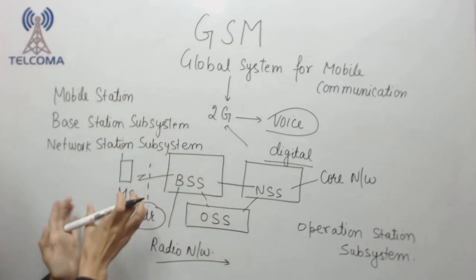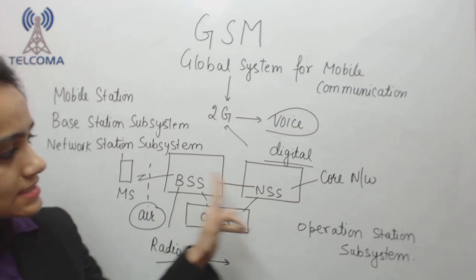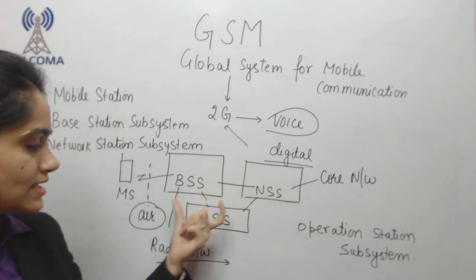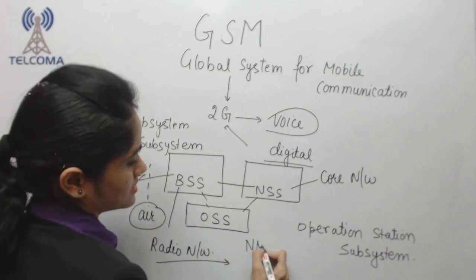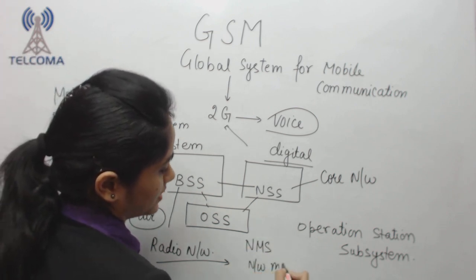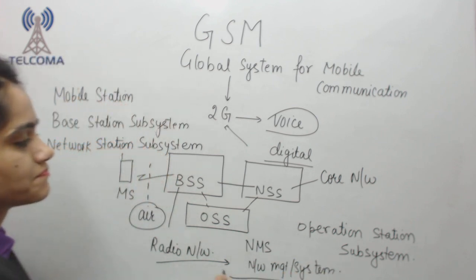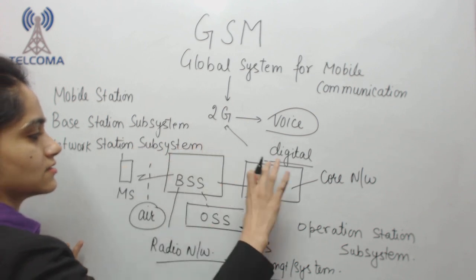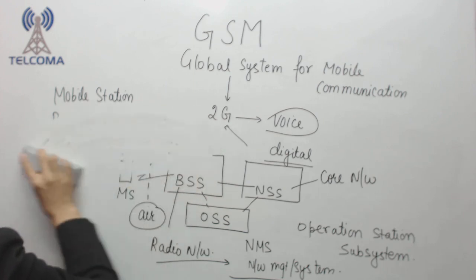So basically, we have the Mobile Station connected to the radio network, which is then connected to the core network — the central controller. For maintenance, we have the Operation Station Subsystem, also called NMS — Network Management or Maintenance System. Now let's discuss these parts in detail.